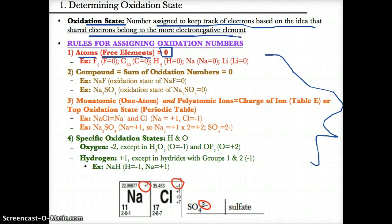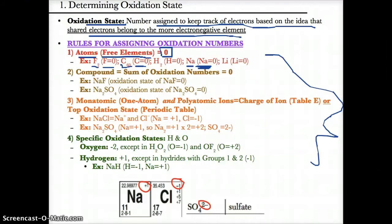That's because atoms have an equal number of protons and electrons, therefore making them neutral. For example, F's oxidation state in F2 is zero, C's oxidation state in C60 is zero, and Na's oxidation state in Na is zero. All these examples show atoms of only one element, so the oxidation state is zero — neutral — because you have the same number of protons and electrons.